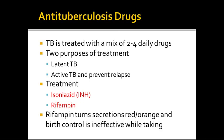Antituberculosis drugs. TB is treated with a mix of two to four drugs daily. There is latent TB and active TB, and treatment aims to prevent relapse. Treatment is isoniazid (INH) or rifampin. Rifampin turns secretions reddish-orange, and birth control is ineffective while taking rifampin.